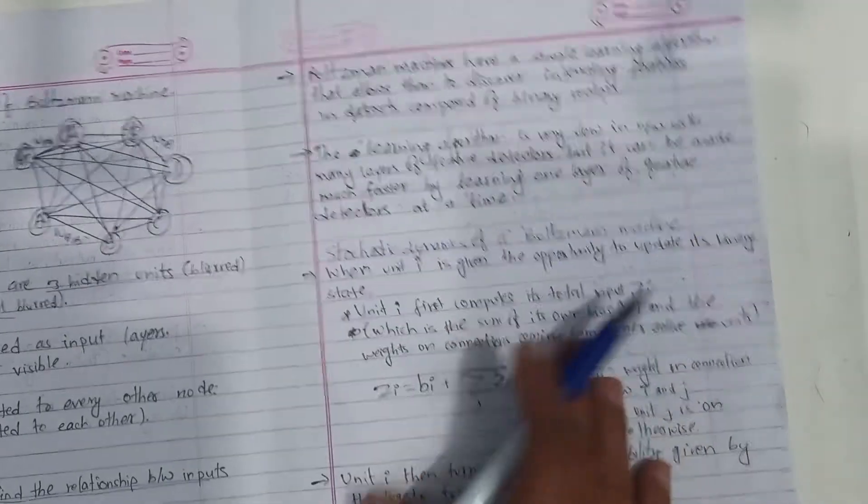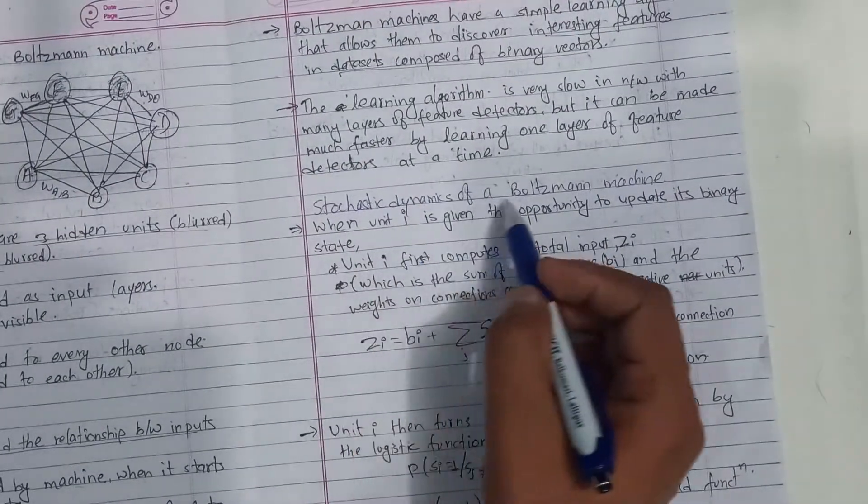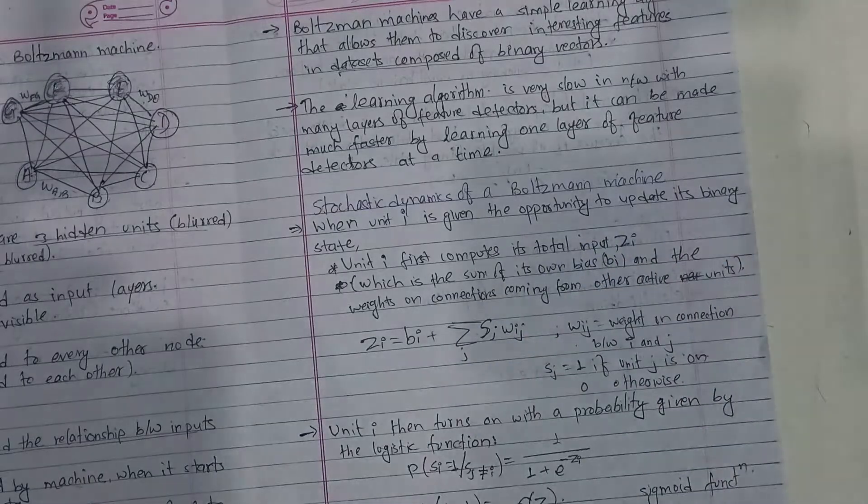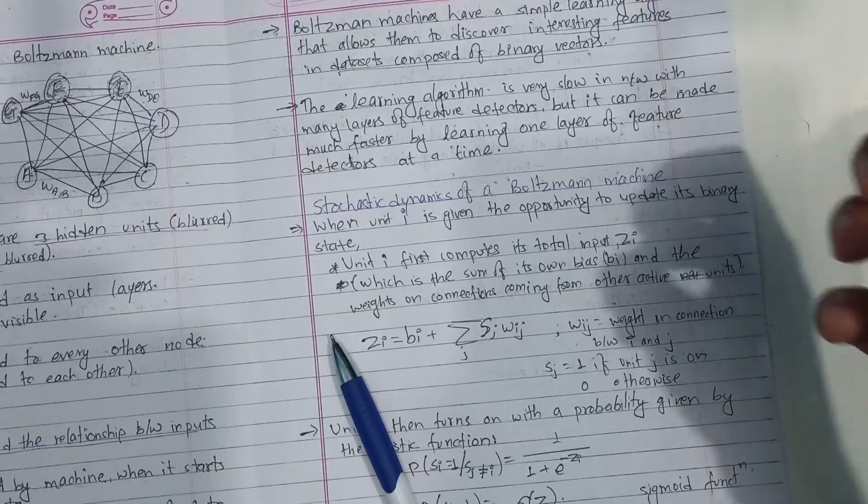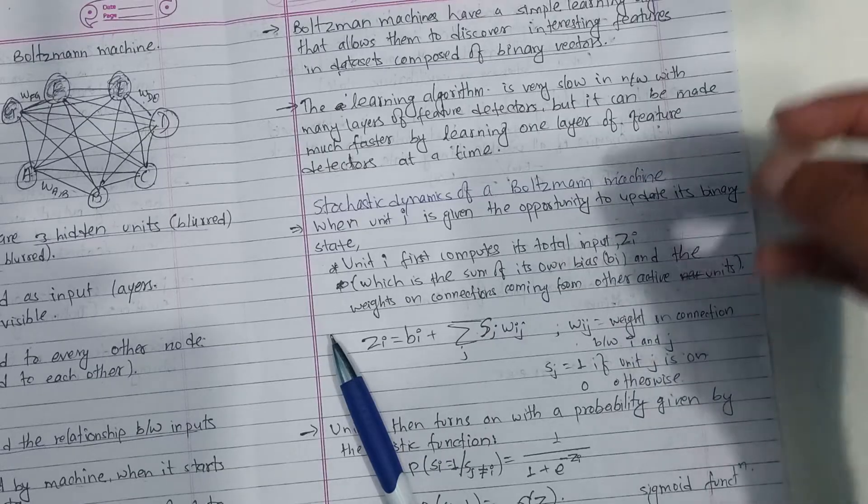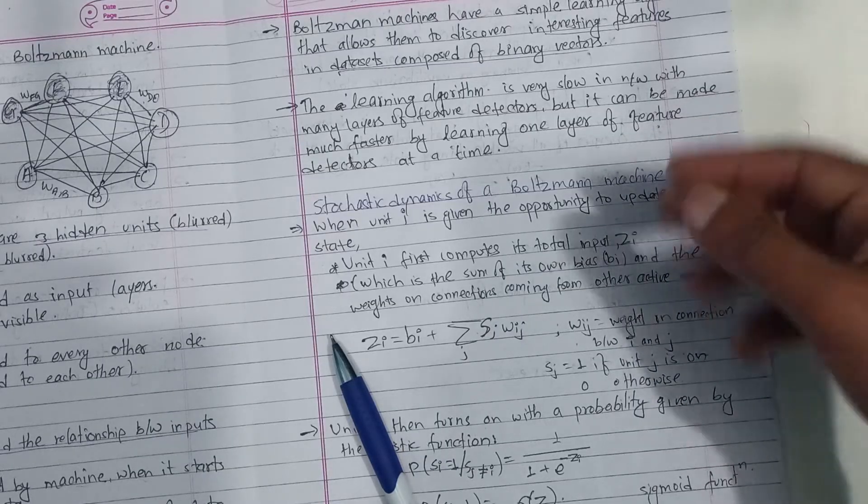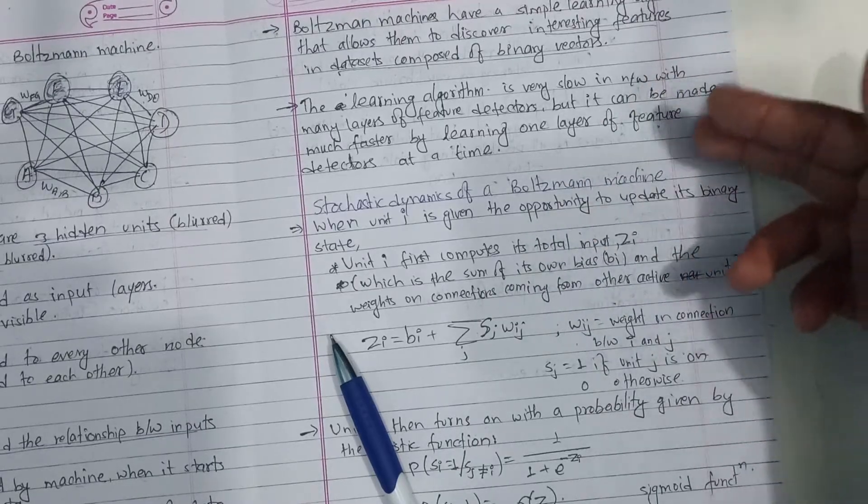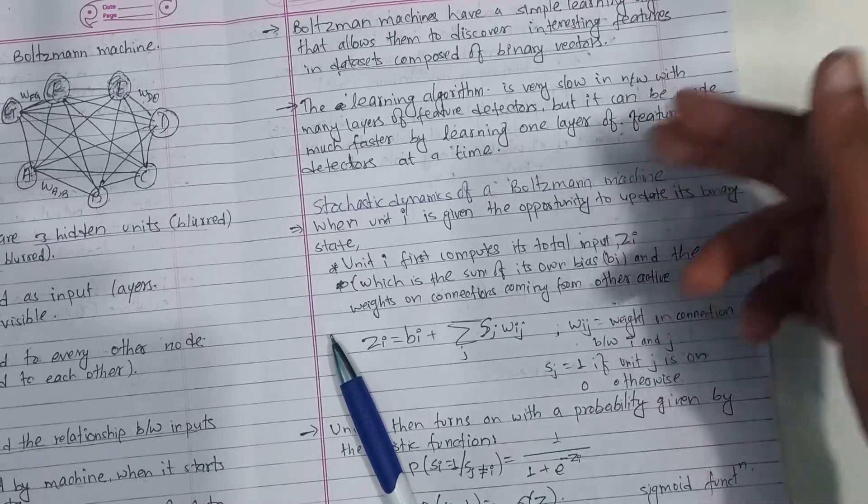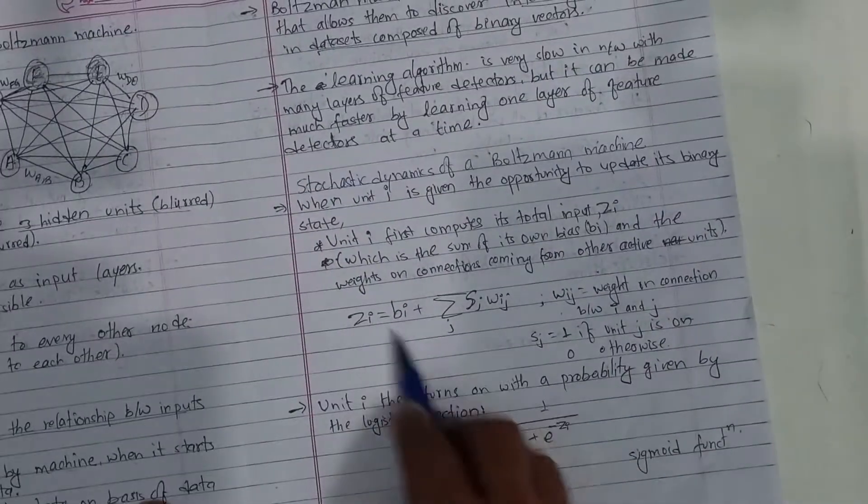And it is very slow. The stochastic dynamics of Boltzmann machine: the neural network is in active state, and it has the stochastic decision. The stochastic decision will be the same as the basis of the neural network.